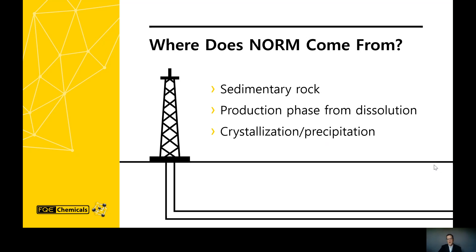The salinity of the water co-produced from the well also has a determinant factor. The higher the salinity, the more NORM is likely to be mobilized. Since the salinity often increases with the age of the well, older wells tend to exhibit higher NORM levels than younger wells.